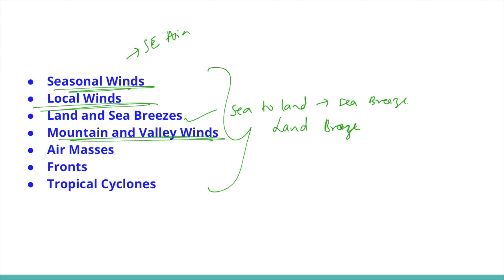Mountain and valley winds: in mountainous regions, during the day the slopes heat up, air moves upslope, and air from the valleys blows up the valley — this wind is known as the valley breeze. During night, the slopes cool, and dense cold air descends into the valley as mountain wind. The cool air draining from high plateaus and ice fields into the valley is called katabatic wind.